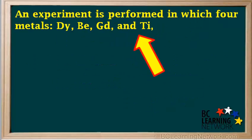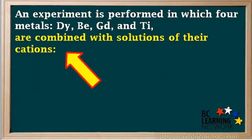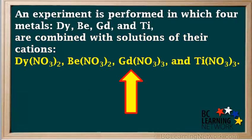An experiment is performed in which the four metals DY, BE, GD, and TI are combined with solutions of their cations, as shown here. Notice these are all nitrate compounds. Nitrate ions are spectators here, so it would be useful to discard the nitrates from the formulas and express these as cations.